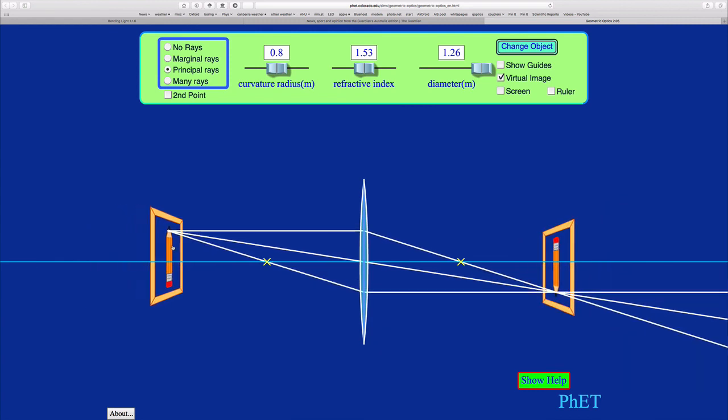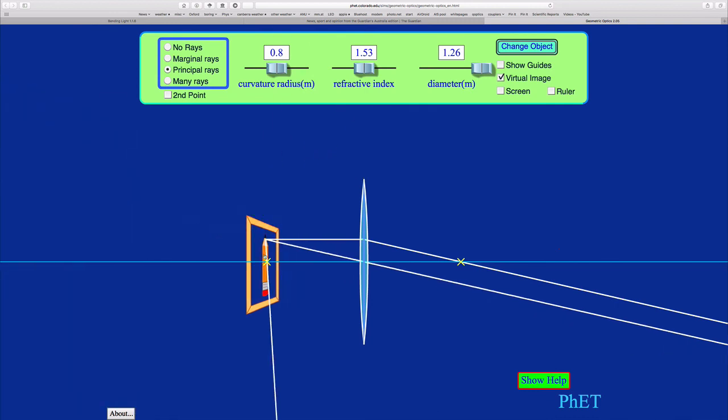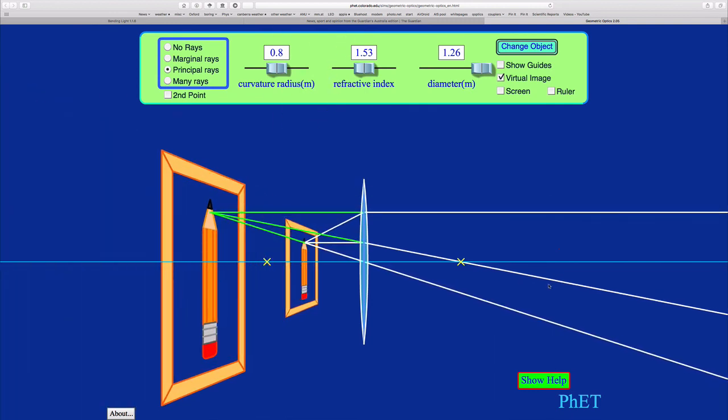And at some point, if I go this side of the focal point, the image is now virtual. Rather than forming an image on this side of the lens, the image forms on this side over here. And we'll deal again with virtual images a bit later.